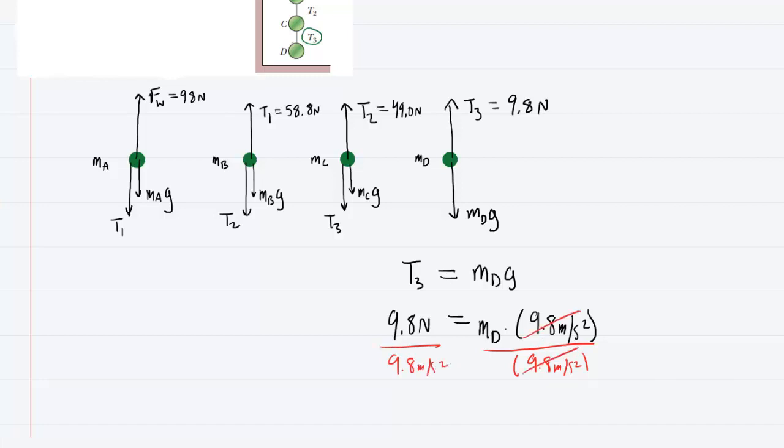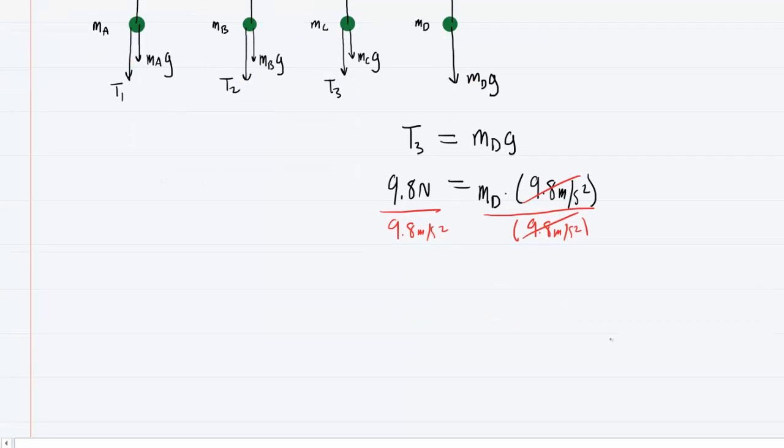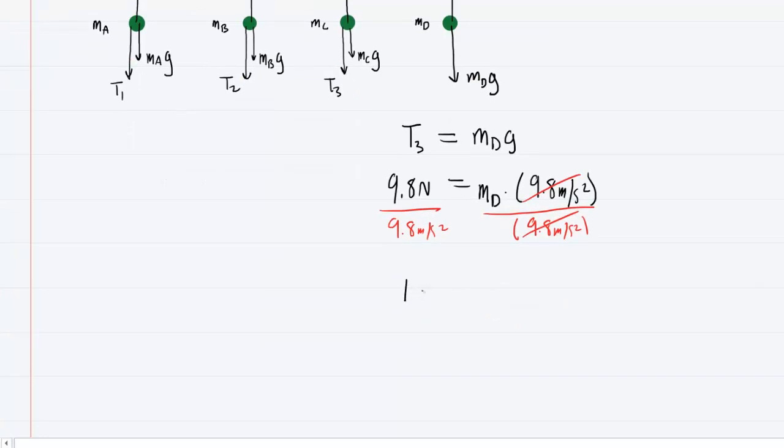They'll cancel out on the right-hand side and we can see in this case that the numbers yield a mass of 1 kilogram for disk D. So this would actually be the correct answer for part D of the question.